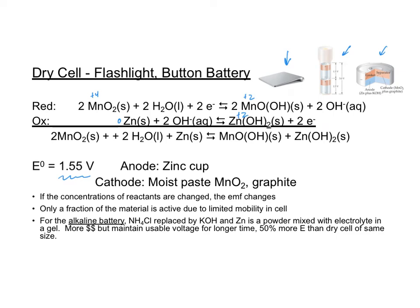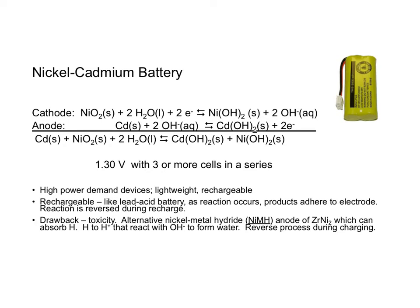The third one is a nickel-cadmium battery, used in many different applications. The cathode is nickel in the +4 state; it undergoes reduction to make nickel hydroxide in the +2 state. Since it's undergoing reduction, it is the oxidizing agent. At the anode, cadmium goes from 0 to cadmium hydroxide at +2 — that is oxidation, so it is called the reducing agent. Notice the terminology we used in the beginning of the chapter.